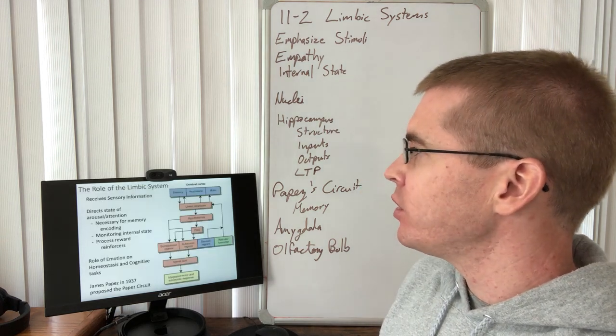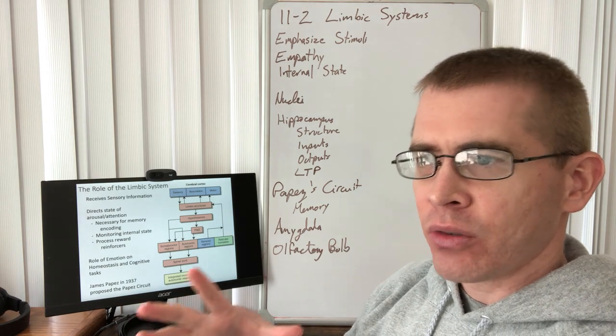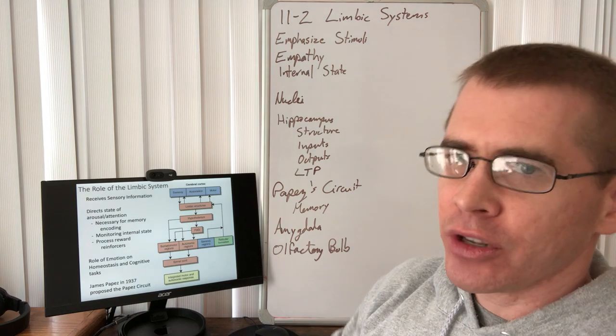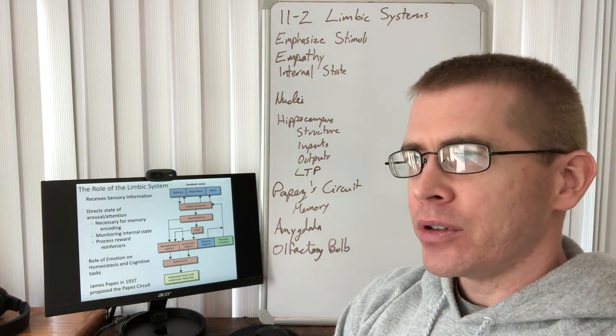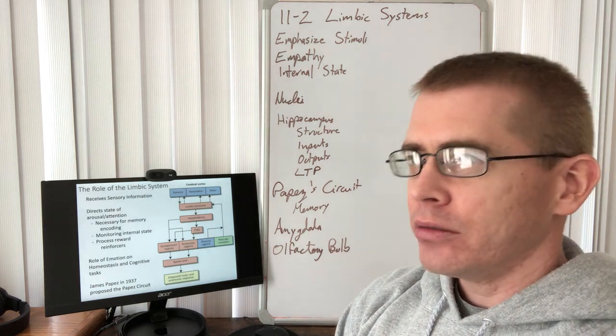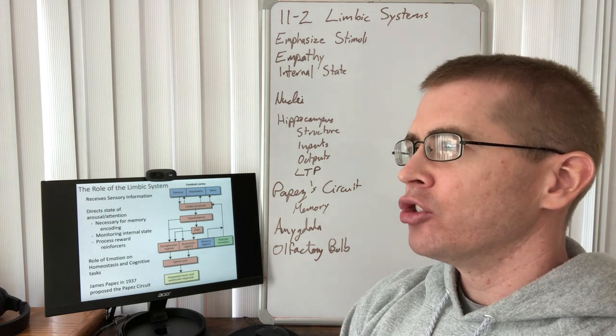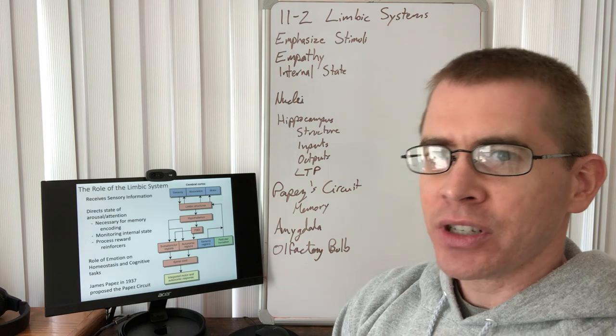So let's take a look at what the role of the limbic system is, how these things are organized, and how they're connected. The limbic system is receiving all of this sensory information. It's getting collaterals about our state of being, about our environment around us.